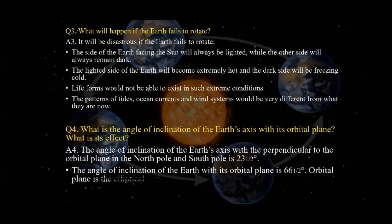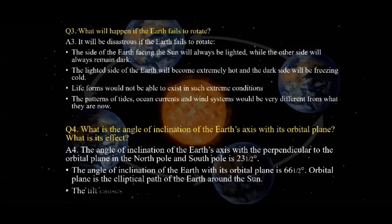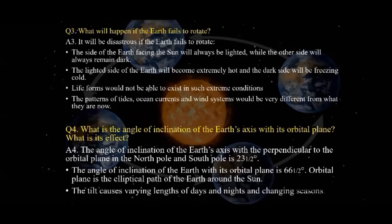Why do we have seasons? The axis of the Earth is inclined at an angle of 23.5 degrees with the perpendicular of the orbital plane. Due to its revolution around the Sun, the Earth faces the Sun in different positions, leading to differential heating of the latitudes. When the tilt of the axis is combined with the revolution of the Earth, we get the changing seasons.